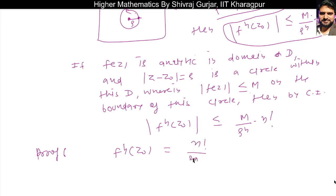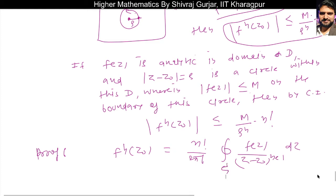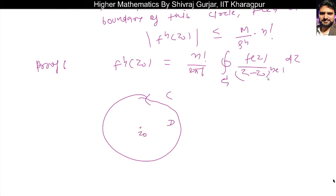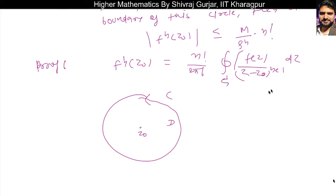This follows from the nth derivative formula: f^(n)(z₀) equals n factorial divided by 2πi times the integral of f(z) divided by (z - z₀)^(n+1) dz along contour C. The function f(z) divided by (z - z₀)^(n+1) is not analytic because z₀ is a singularity — it makes the denominator zero — so z₀ here is a point of non-analyticity.